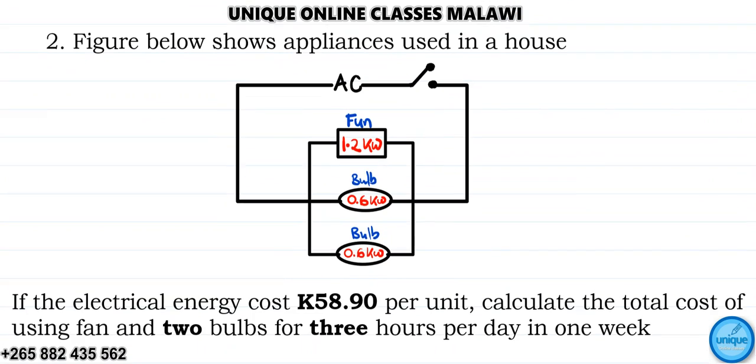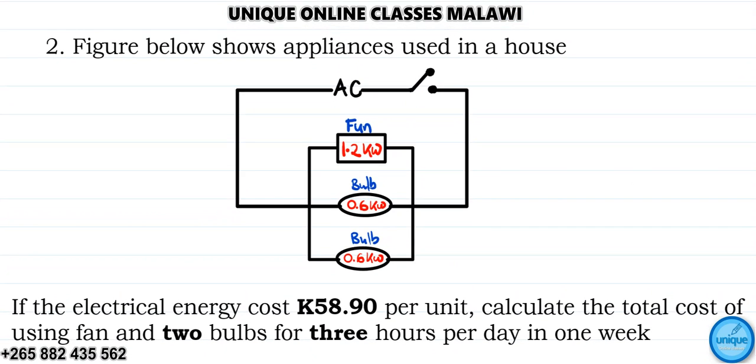The next question: Figure below shows appliances used in a house. So we have the fan, which is 1.2 kilowatts, and we have two bulbs. Each bulb is rated 0.6 kilowatts, which is 600 watts.